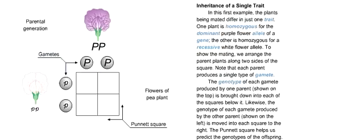The genotype of each gamete produced by one parent, shown on the top, is brought down into each of the squares below it. Likewise, the genotype of each gamete produced by the other parent, shown on the left, is moved into each square to the right. The Punnett square helps us predict the genotypes of the offspring.